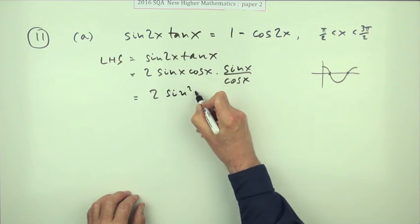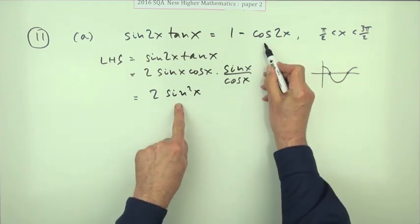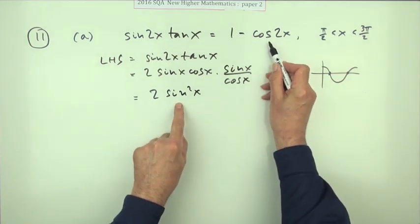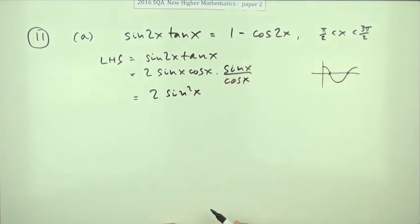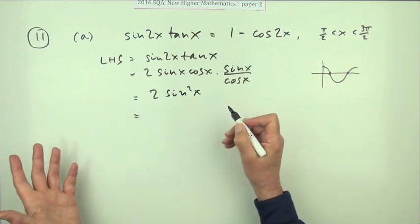Now it is worth 4 marks, but the thing is, when you look at these two parts they're the same because cos 2x is 1 minus 2 sine squared x. You wonder, well how can I get 4 marks out of that, because the next line to that is just that equals 1 minus cos 2x.